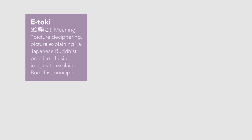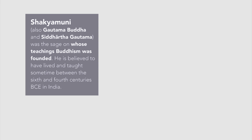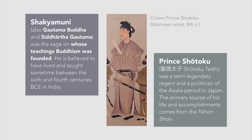Etoki is a form of picture-telling that developed to explain Buddhist principles. Using an emaki, or hand picture, or a painted hand scroll, or rooms with paintings called a picture hall, a monk would point to a picture and explain the story of either Shakumuni, the historical Buddha, or another important Buddhist monk, most notably Prince Shotoku, who is often attributed to bringing Buddhism to Japan from China.